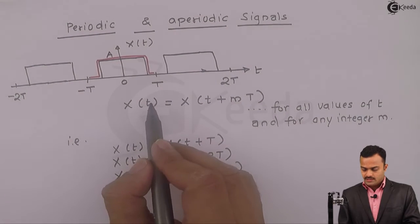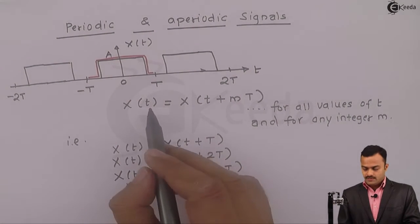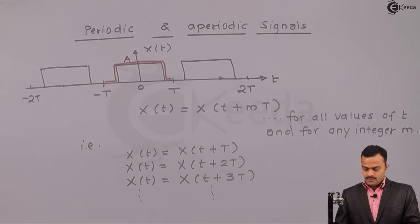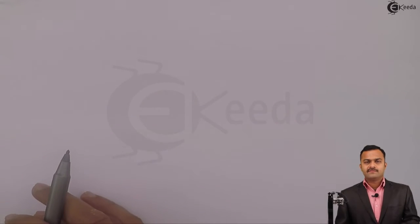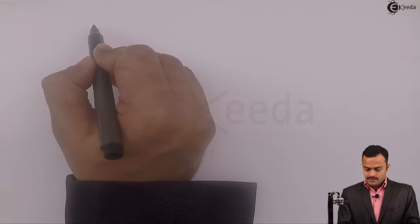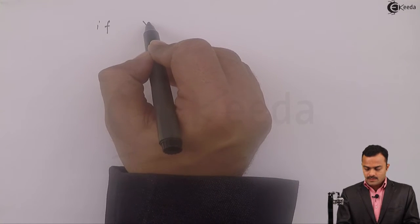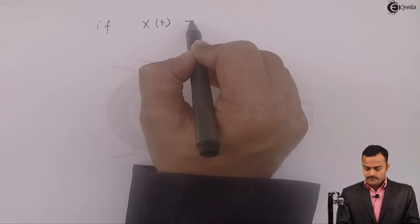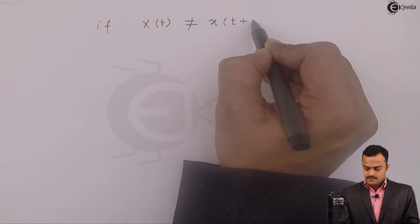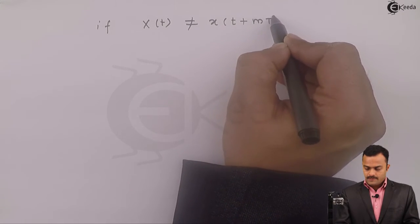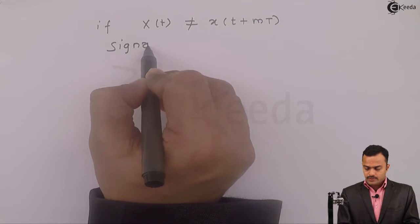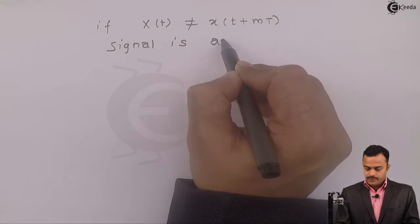Because we are considering here the variable t, which is a continuous time variable. Now, if the signal is not repeating itself, it can be termed as an aperiodic signal. Meaning if I am having x(t) which is not same as x(t + mT), I can say the signal is non-periodic or aperiodic.